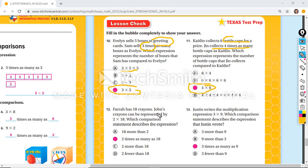The next one. Farrah has 18 crayons. John's crayons can be represented by two times as many as 18. And I just said the answer right there. Two times as many as 18. And look. This one starts with 18. That's not right. The ones that have two that start with two have more and fewer.